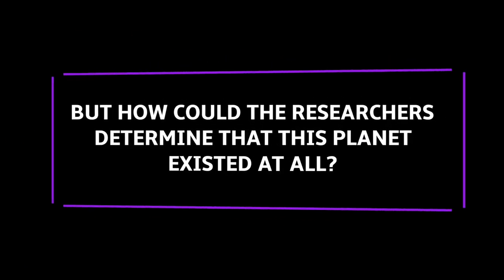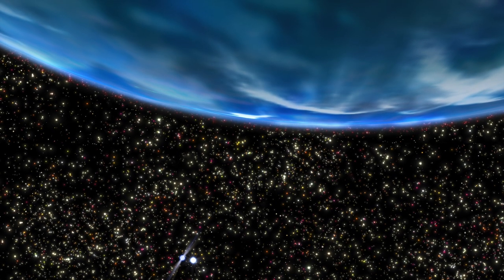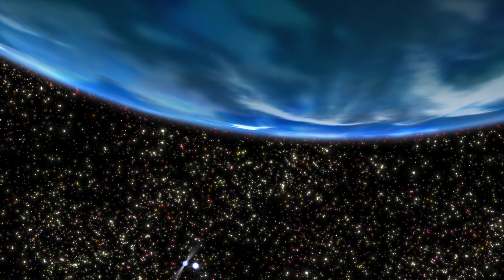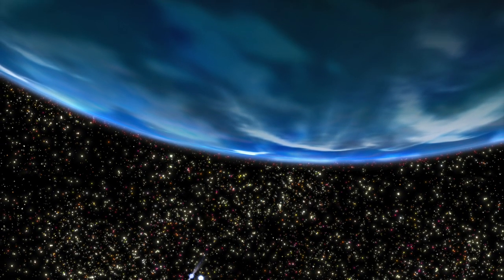But how could researchers determine that this planet existed at all? Using the Hubble data, scientists used the color and temperature of the white dwarf to determine its age and mass, which they compared with the wobbling of the neutron star.